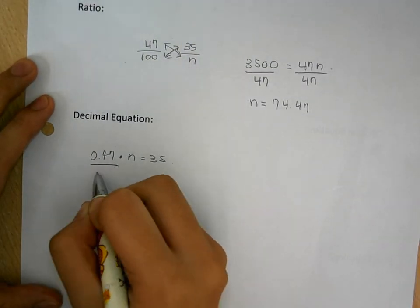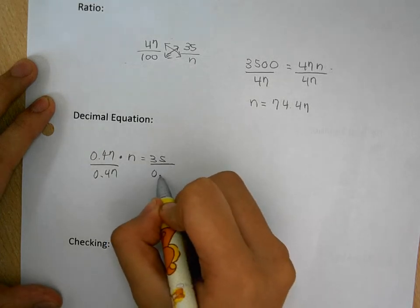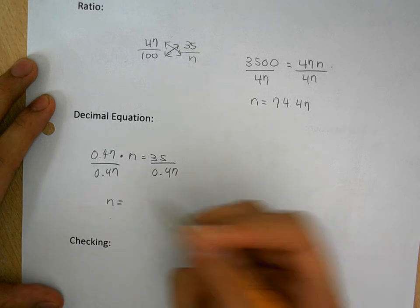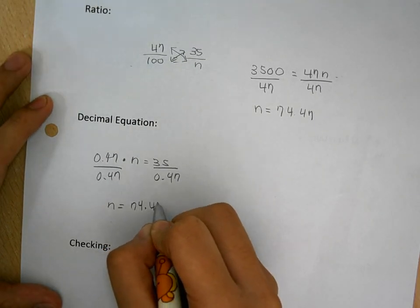But you need to leave the n by itself, so you would need to divide by 0.47 on both sides, which brings you the same conclusion of 74.47.